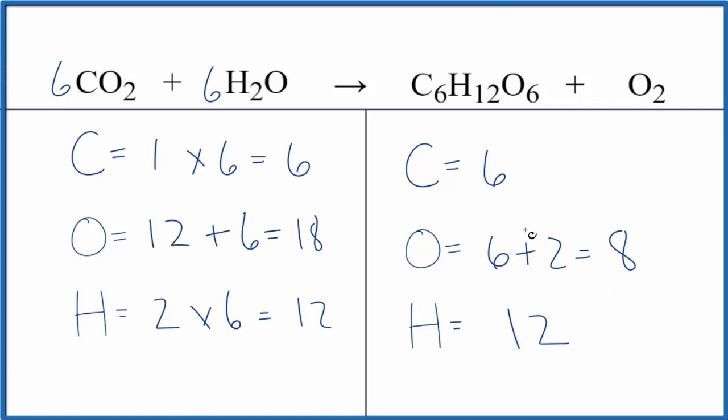So over here, the way to think about this is we have our six oxygens here plus some number that's going to equal 18. Six plus 12, that's 18. So we could put a six right here because we have our six. Two times six is 12 and six plus 12 is 18. We're done.